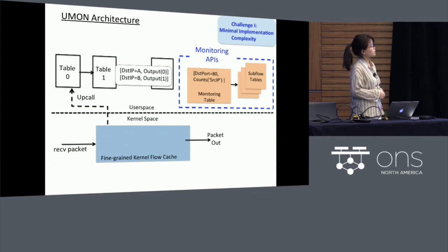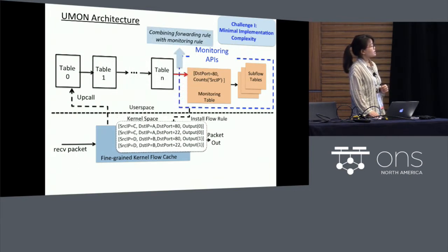For example, if we have two flow rules that are generated by the flow table pipeline in the user space that specifies the actions for the packets towards different destination hosts. However, if the users need to collect the total packet counts towards port 80, as well as the packet counts of the subflows from different source hosts towards port 80, if we simply install these two flow rules generated by the table pipeline into the flow table in the kernel space, it only collects the total packet counts towards different destination hosts. So to achieve the monitoring capabilities defined by the user, UMON combines the forwarding rule with the monitoring rule in order to generate more fine-grained forwarding rules. Here is the forwarding rule generated by UMON I listed out here in this case.